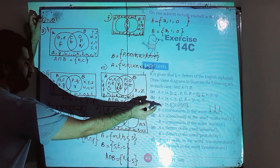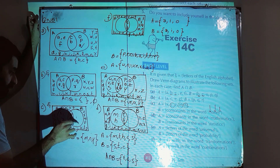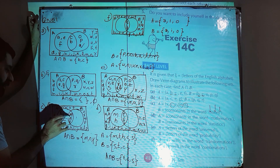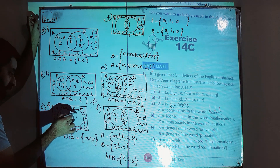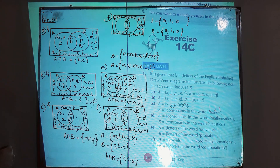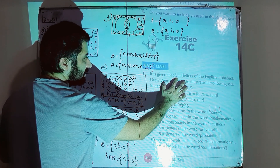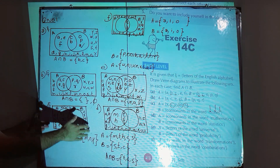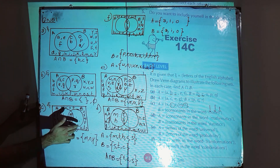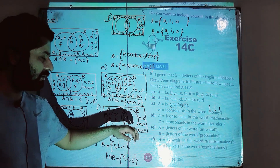After writing m, n, and y in the overlapping part, the remaining elements from A are x and z, which are written in the section that only belongs to A. The section of B outside the overlap is empty, because all elements of B — m, n, y — are already in the overlapping section. The remaining English alphabets not in either circle are written outside the circles but within the rectangle.